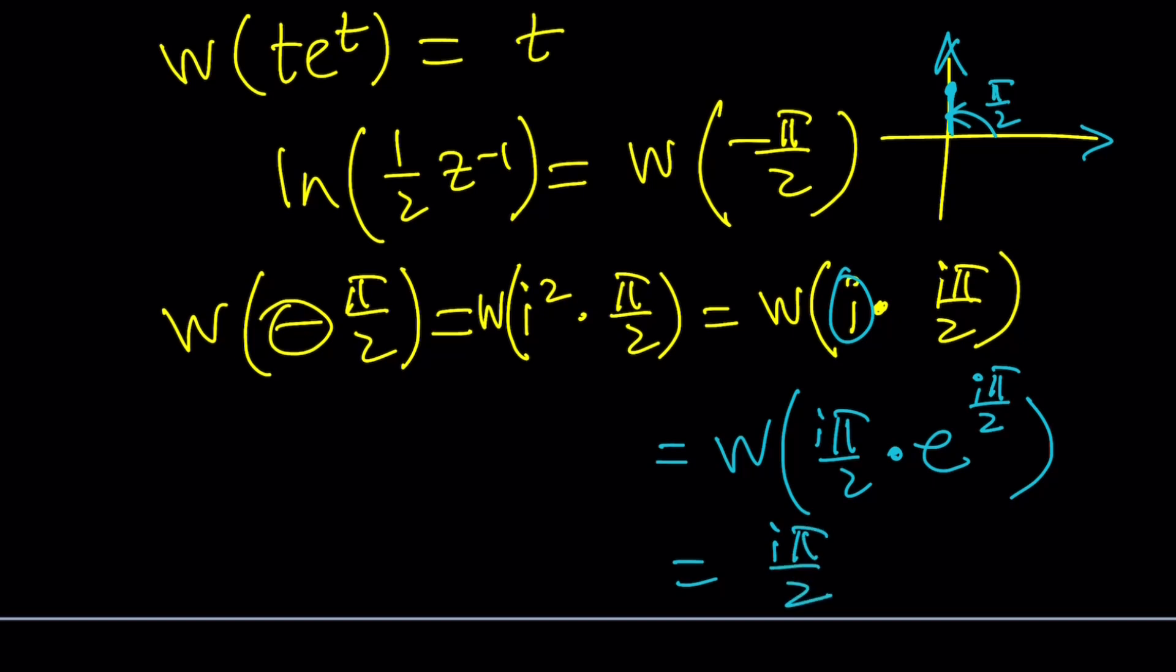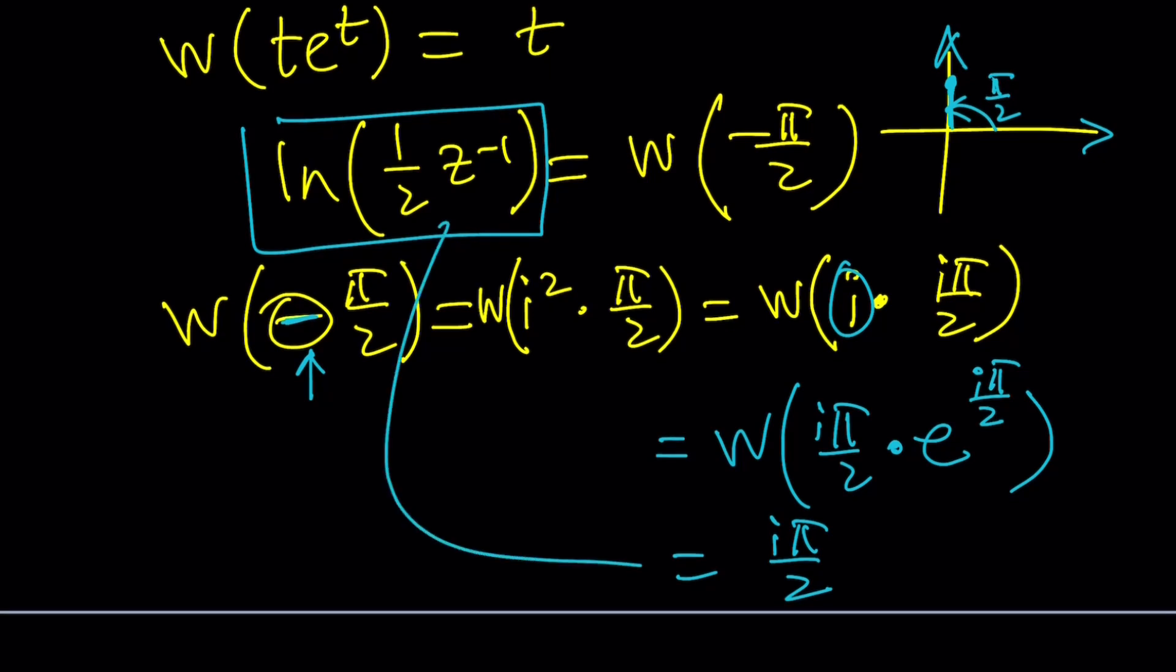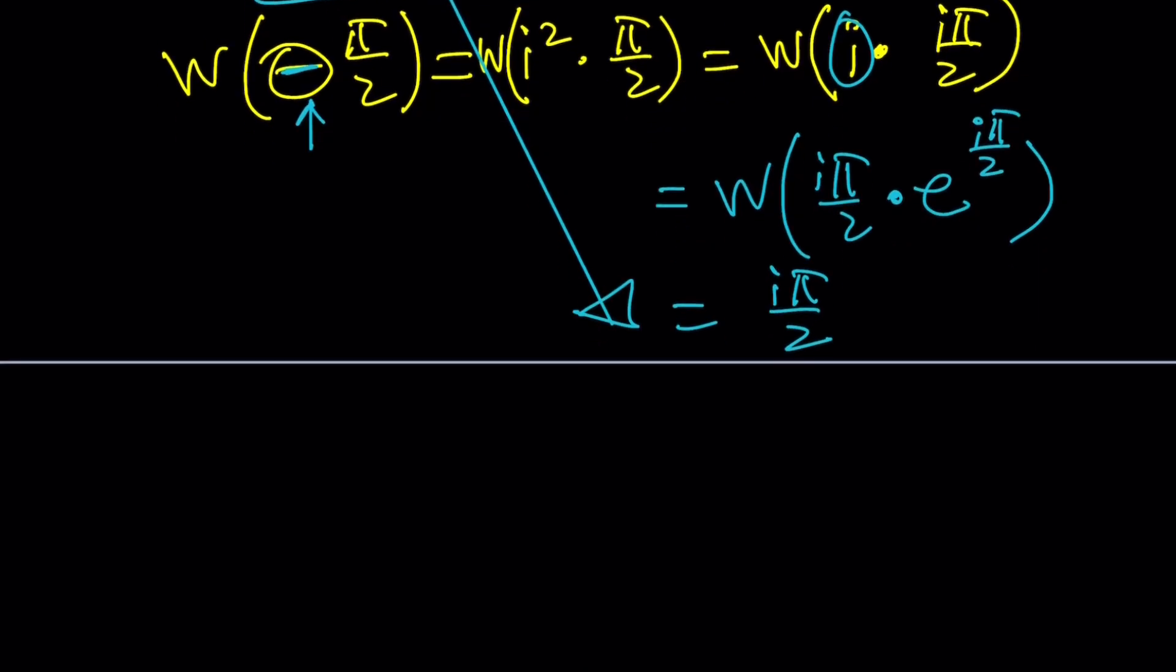But here, by the way, that looks like theta but that's actually a negative sign. I circled it. Now this is what I have. It's equal to this. Okay. Make sense? Oops. Okay, something like that. So ln(1/2 of z to the negative 1) equals iπ over 2. And from here, I can do e to the power that.